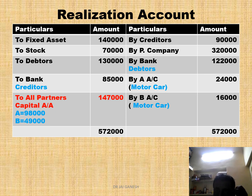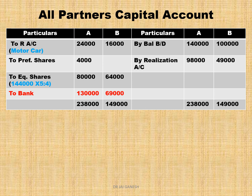Partners' capital accounts — Step 1: Bring down the capital balance of A as Rs. 1,40,000 and B as Rs. 1,00,000. Then record the realisation loss distributed to both partners. Then motor cars taken over by A and B. Then preference shares given to A Rs. 4,000. Total preference shares are Rs. 64,000 — Rs. 60,000 paid to B towards his loan. Distribute equity shares to A and B in the specified ratio of 5 to 4.